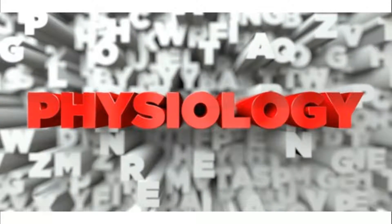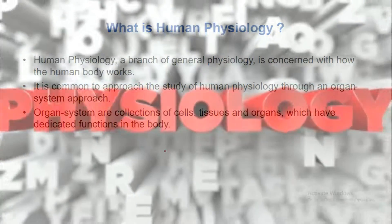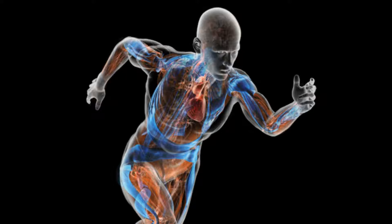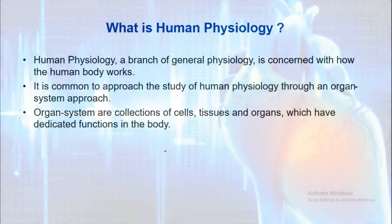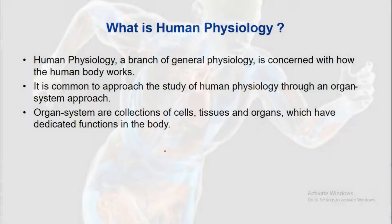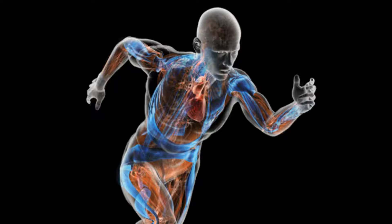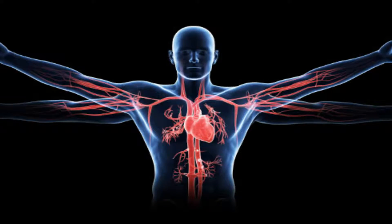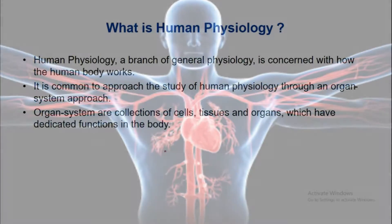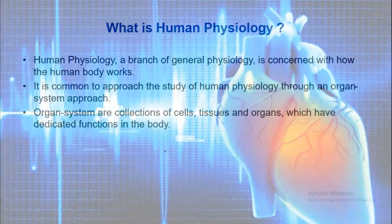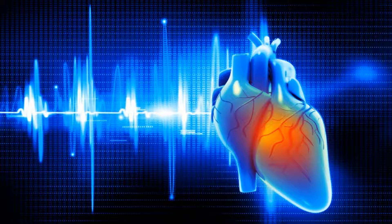In human physiology, we attempt to explain the specific characteristics and mechanisms of the human body that make it a living being. The very fact that we remain alive is the result of complex control systems. For example, hunger makes us seek food, fear makes us seek refuge, sensations of cold make us look for warmth, and other forces cause us to seek fellowship and to reproduce. Thus, the human being is in many ways like an automaton.